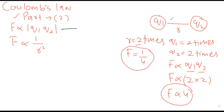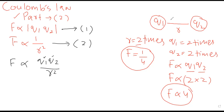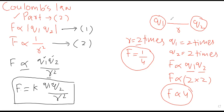So दो statements clear हुईं: force is directly proportional to product of magnitude of charges, and inversely proportional to square of the distance between their centers। Combining both relations: F is proportional to Q1×Q2 divided by R². Q1 and Q2 are in numerator because directly proportional quantities go in numerator, and R² is in denominator because inversely proportional quantities go in denominator। By removing the proportionality sign, we introduce a constant k.